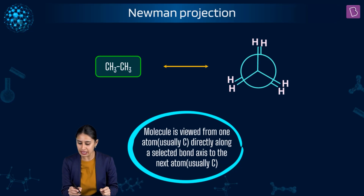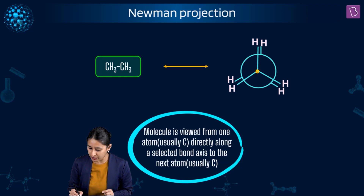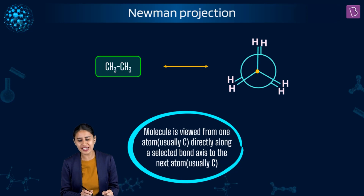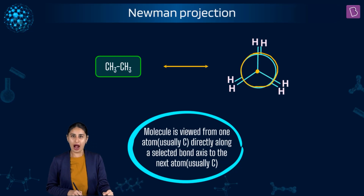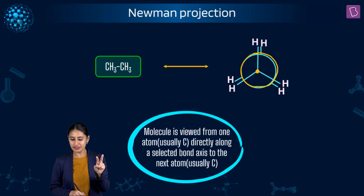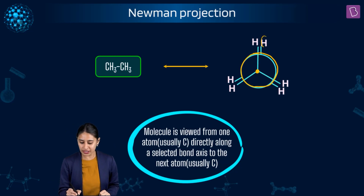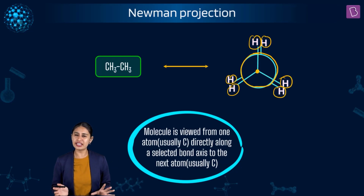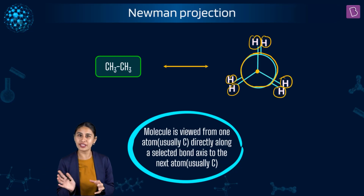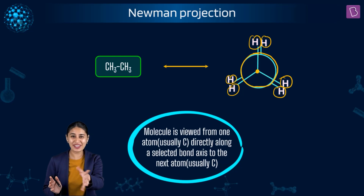In the Newman projection, we have one carbon here which is the front carbon, and the full circle out here represents the second carbon at the back. So two carbons are represented. Please observe the hydrogens — it's better to observe it in 3D. Sawhorse is something you have already seen.